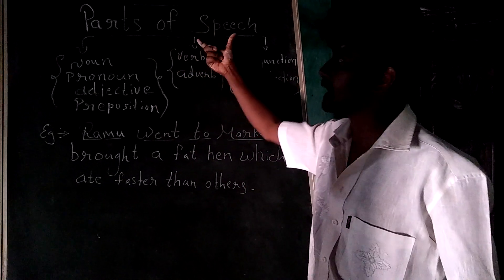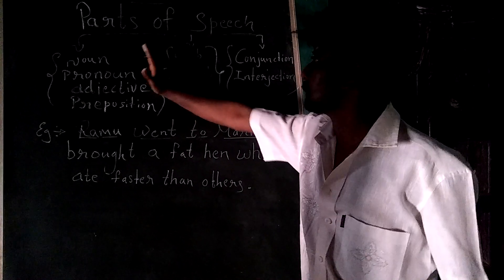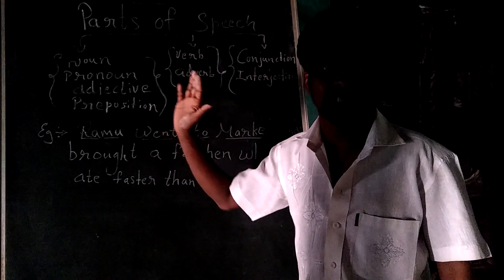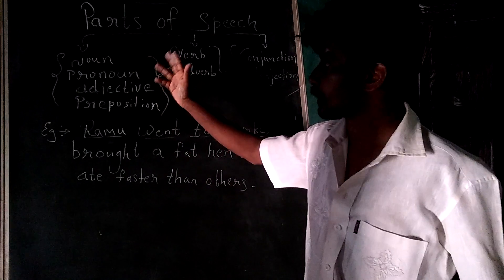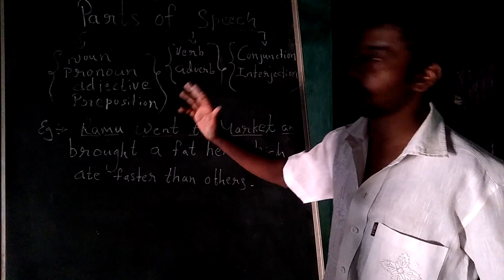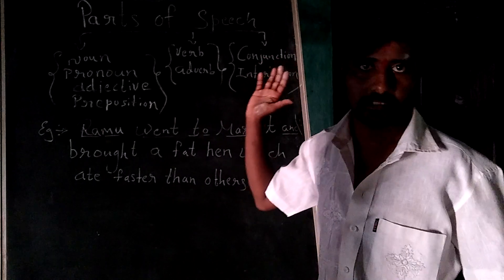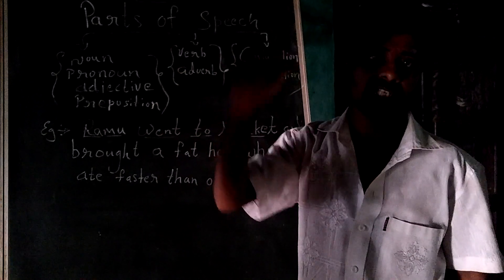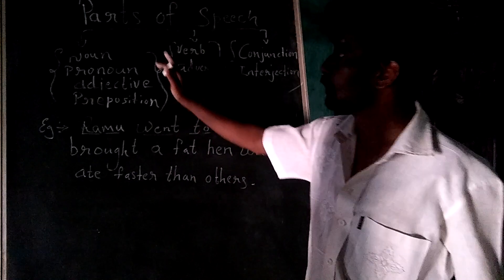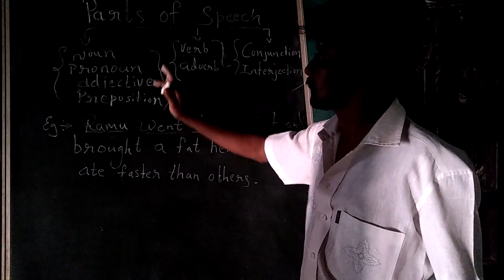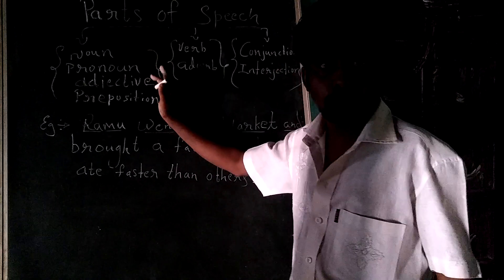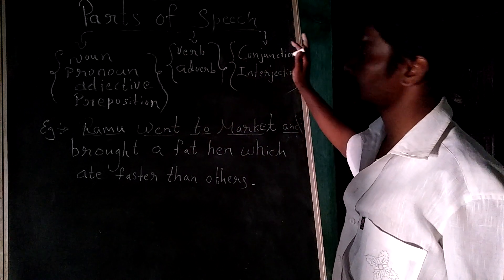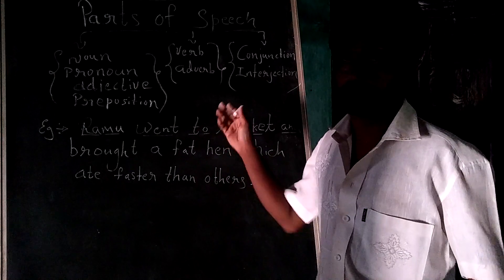So you can see the parts of speech. Here I have divided them into three parts. You know there are eight parts of speech in English: noun, pronoun, verb, adverb, adjective, preposition, conjunction, and interjection. But I have divided them into three groups to make you understand easily. According to the first group we have kept four parts of speech, in the second group there are two, and in the third group there are two other parts of speech.